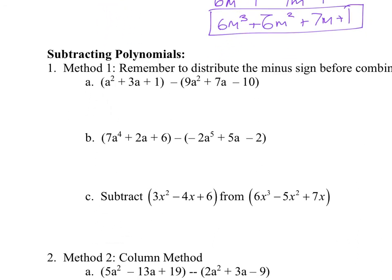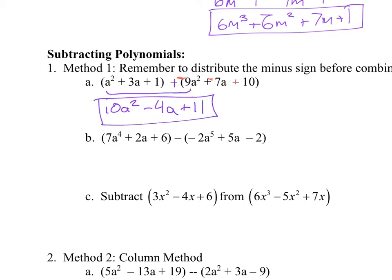Now for subtracting, you have to be careful — the negatives jump out and bite you. What I do is distribute that negative sign in, turning the subtraction into addition. So the signs inside the second polynomial all flip. This becomes an addition problem: 9a squared plus 1a squared is 10a squared; 3a minus 7a is negative 4a; 1 plus 10 is plus 11. That's my final answer.